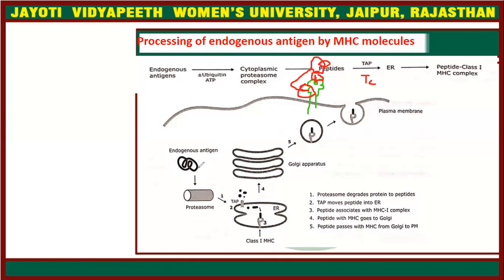So this is the processing of endogenous antigen through MHC complex. To recap: first the antigen enters the cell; the proteasome complex degrades it into small peptides. Then the TAP molecule carries the peptide to the endoplasmic reticulum, where the MHC complex anchors the peptide on its binding groove. Next, the MHC complex moves to the Golgi and forms a vesicle, then moves outside the cell, attaches to the surface, and presents the antigen to cytotoxic T cells or T helper cells. The antigen is then killed and eliminated.